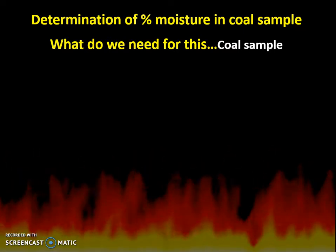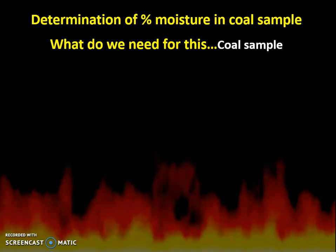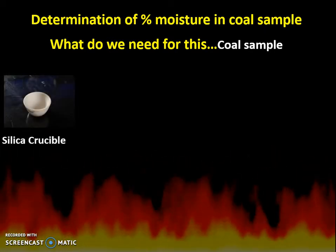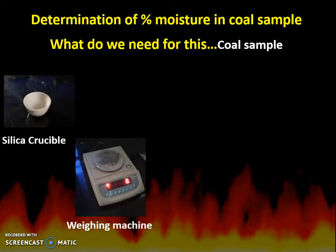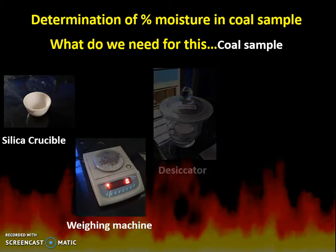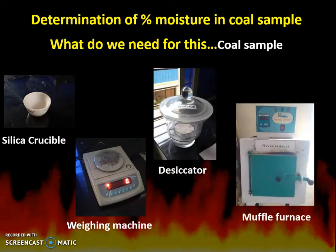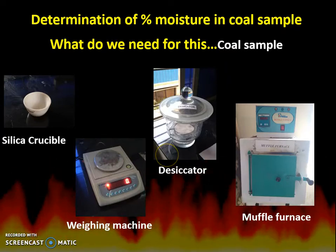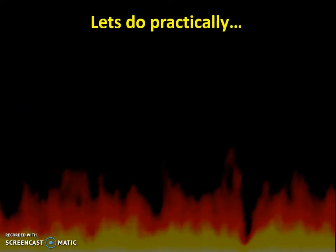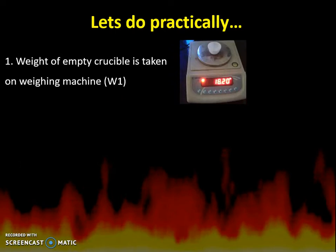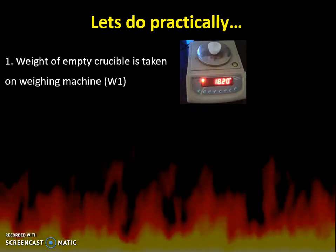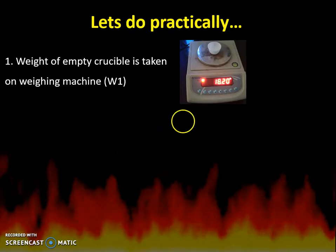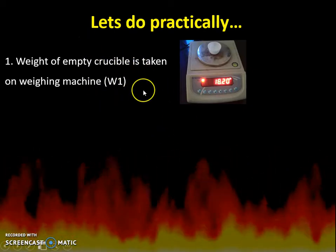What we need for this practical is: the coal sample under examination, a silica crucible, a weighing machine, a desiccator, and a muffle furnace. To begin the practical, you have to weigh the empty crucible on the weighing machine — that weight is taken as W1 grams.